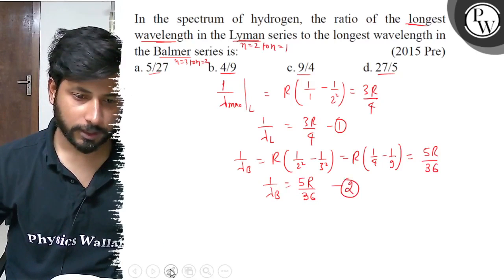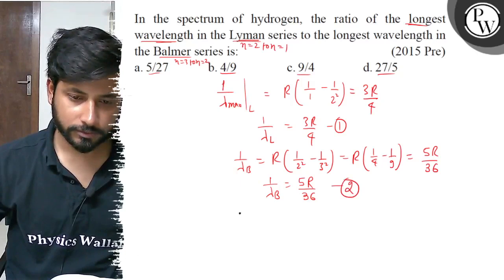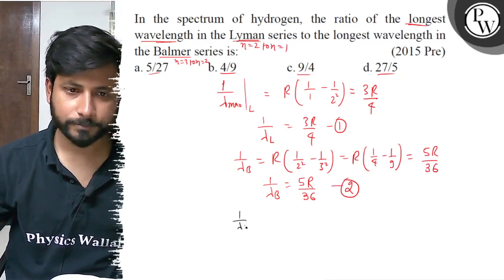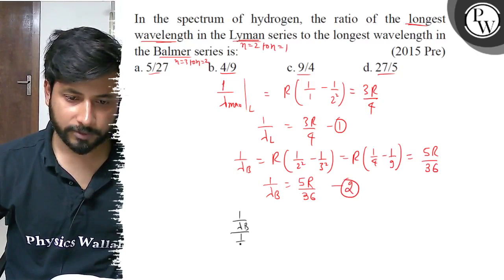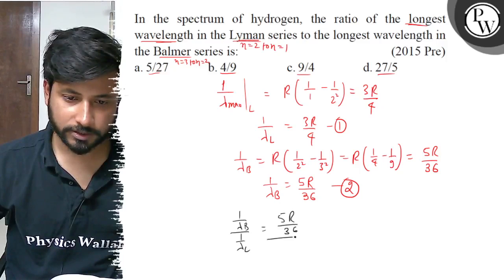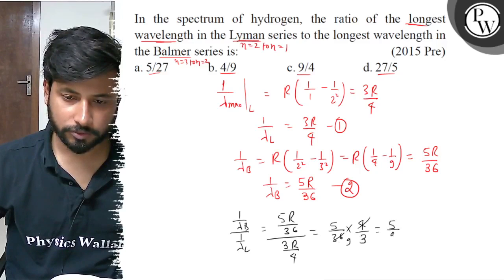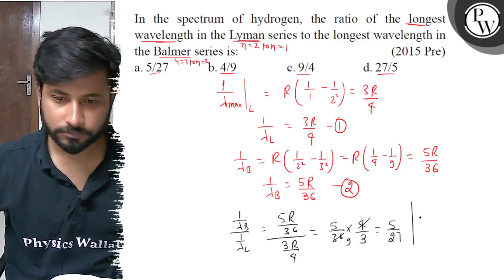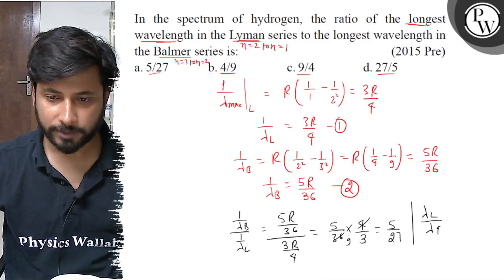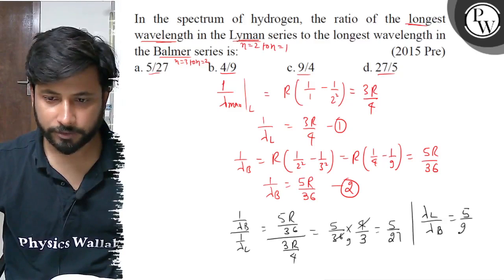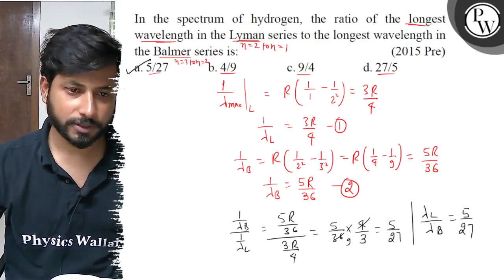Now this is the ratio. Here is 1 by lambda B divided by 1 by lambda L. We have 5R by 36 divided by 3R by 4. Here we have 5 by 36 into 4 by 3. Here we have 5 by 27. So lambda L by lambda B equals to 5 by 27. Final answer is option A. Best of luck.